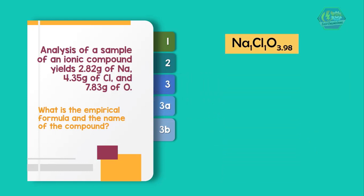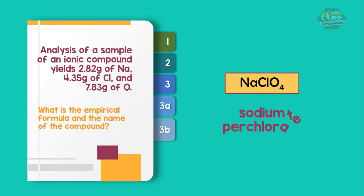We do not need to multiply by any number to make all subscripts whole number because we can round off 3.98 to 4. Hence the empirical formula is NaClO4, and its name is sodium perchlorate.